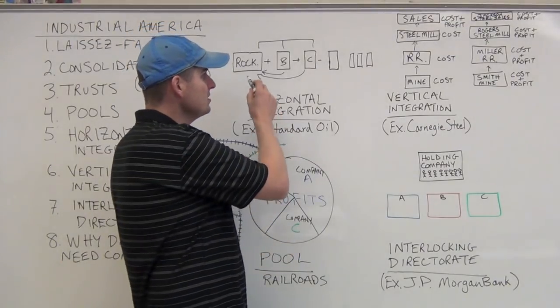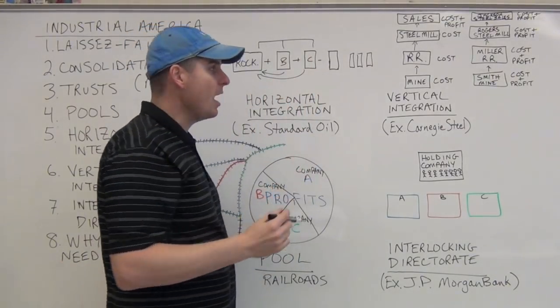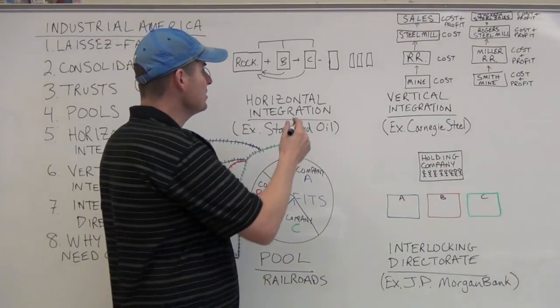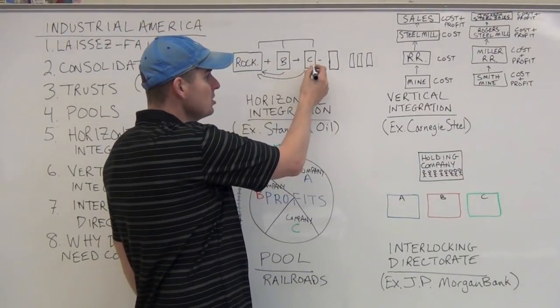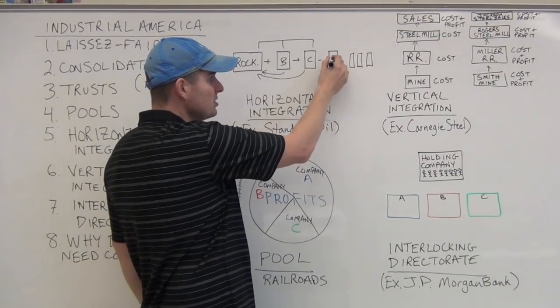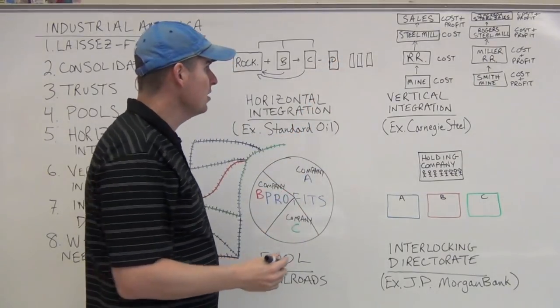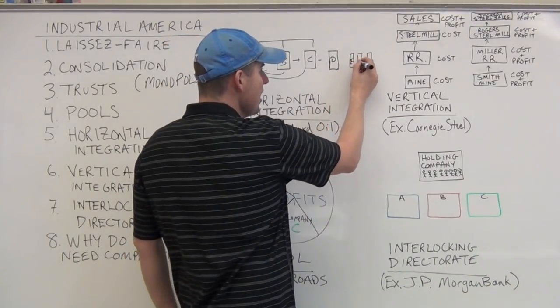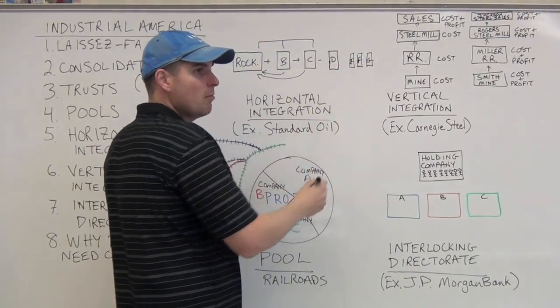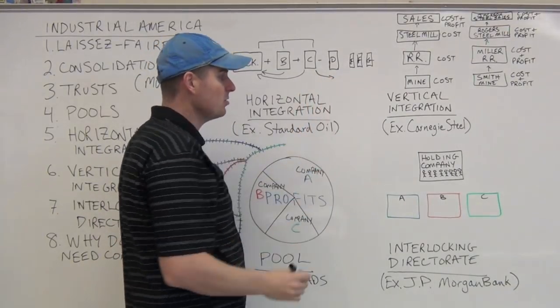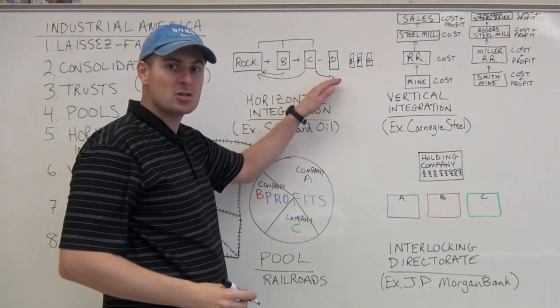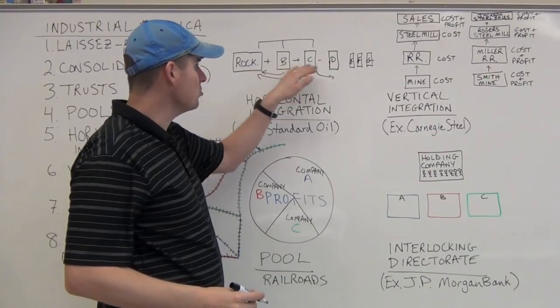So Rockefeller is not going to need to make as much profit per barrel of oil or per refinery cost because he's doing so much more of it. And what he then decides to do is come in, and he can afford to lose. So he will come into new markets and compete with existing people, companies D, E, F, and G.